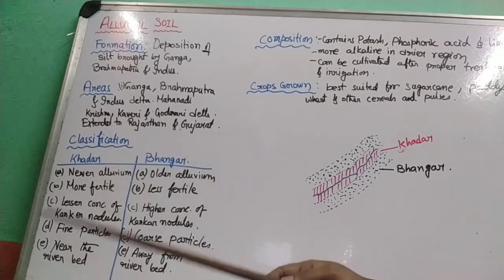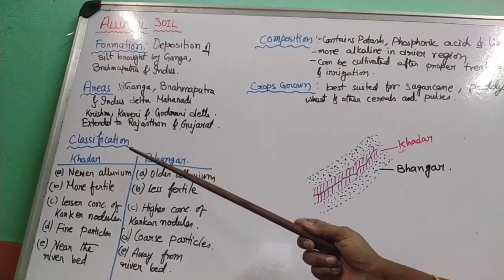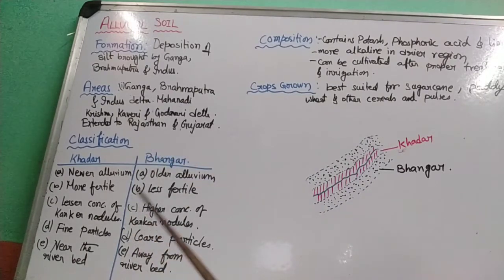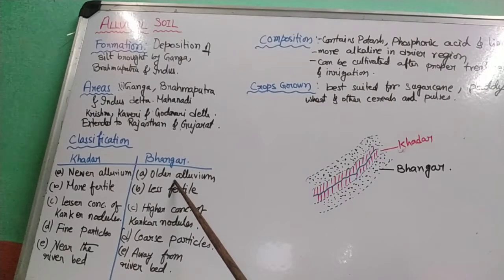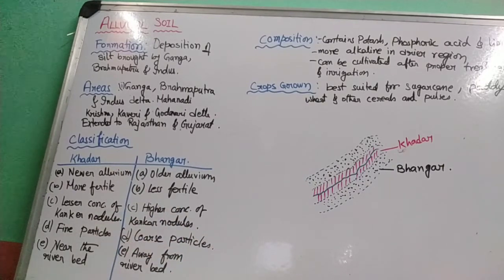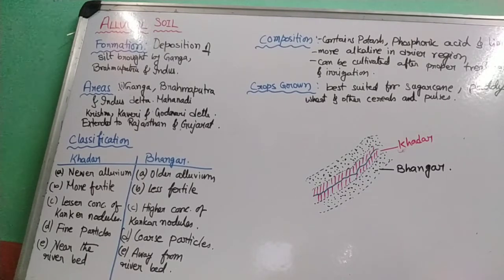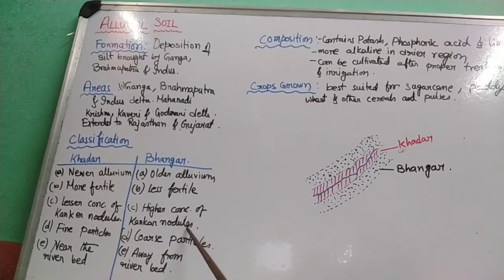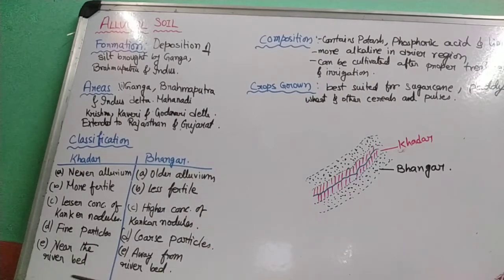Alluvial soil is classified into Khadar and Bhangar. Khadar is the newer alluvium and Bhangar is the older alluvium. Khadar is more fertile; Bhangar is less fertile. Khadar has a lesser concentration of Kankar nodules — coarse rocky particles that do not promote healthy crop growth — while Bhangar has a higher concentration of Kankar nodules. Khadar has finer particles; Bhangar has coarser particles.